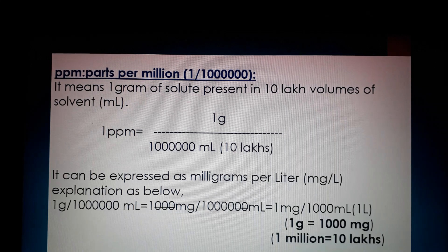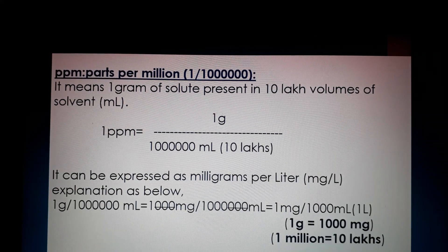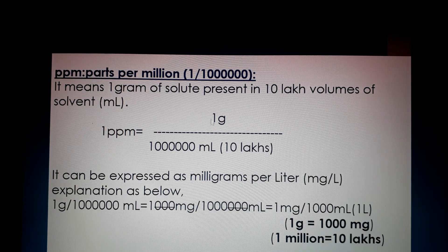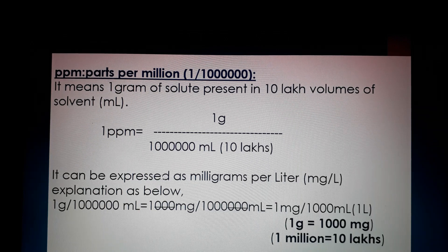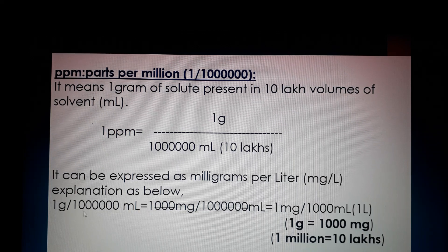Let's start with PPM. PPM stands for parts per million — one part in one million parts of another substance, such as a solute in a solvent. It means one gram of solute present in 10 lakh volumes of solvent. One PPM is equal to one gram per 10 lakh ml of solvent. It can also be expressed as milligrams per liter.